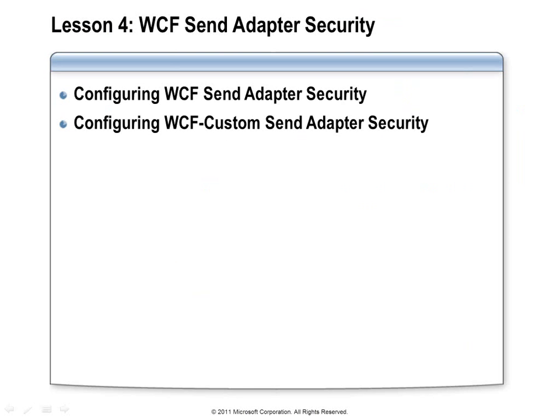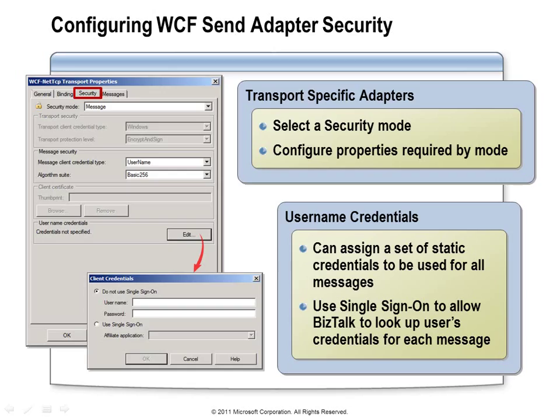In our fourth lesson, we focus on send adapter security — how to configure various service options to apply security, and security applied at the WCF-Custom adapter, where you have full control over the WCF configuration properties. On adapters like the WCF-NetTCP, you'll find a security tab where you can choose the security mode: generally Transport or Message, with some supporting a mixed mode of Transport with Message Credential. The UI is tailored to provide custom options based on which mode is selected.